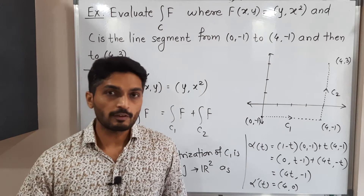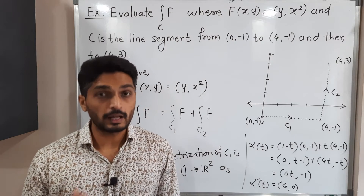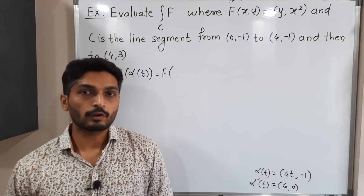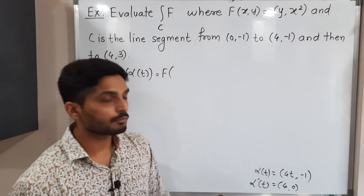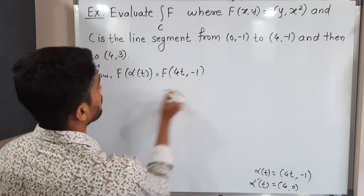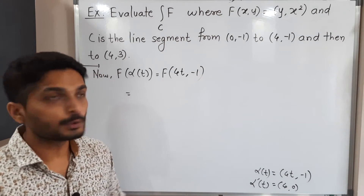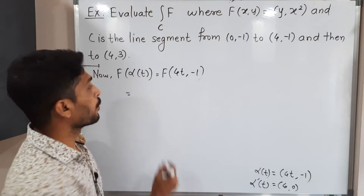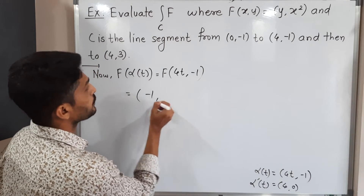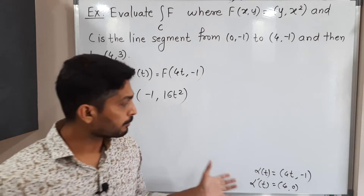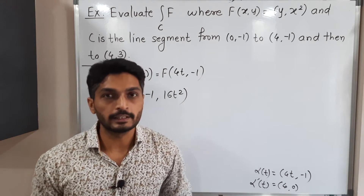Next we find f(alpha(t)). Since alpha(t) = (4t, -1), we substitute into the definition of f, which gives (y, x²). So y = -1 and x² = (4t)² = 16t². Therefore f(alpha(t)) = (-1, 16t²).